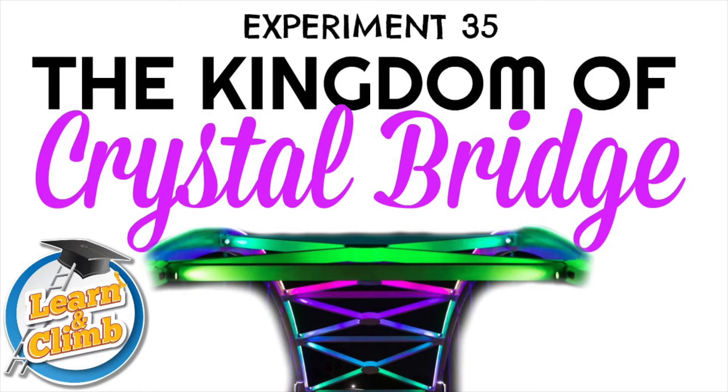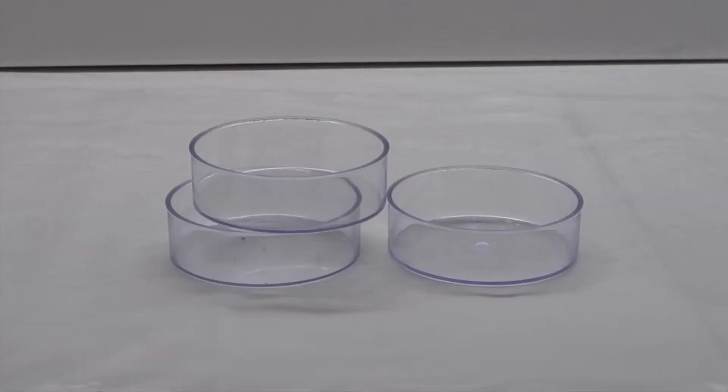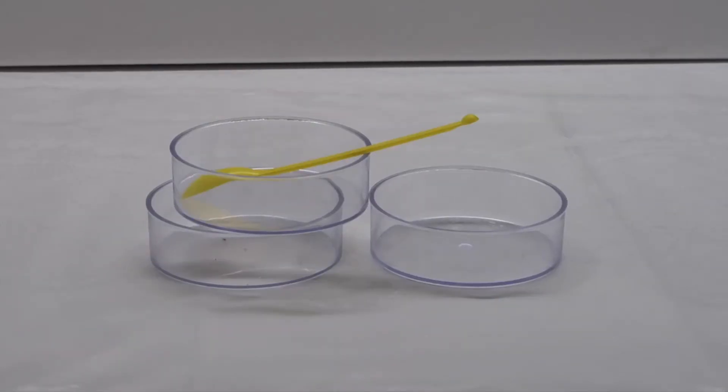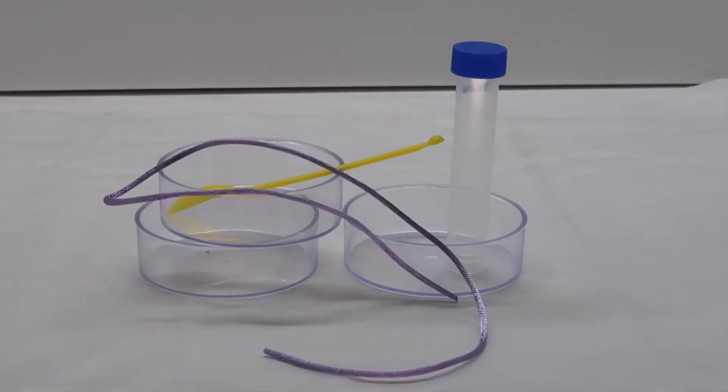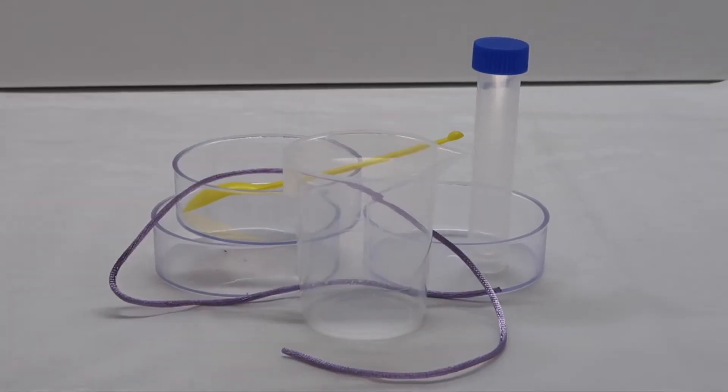Experiment 35: The Kingdom of Crystal Bridge. Tools needed from kit: 3 petri dishes, the yellow measuring scoop, 1 small test tube, purple string, a beaker. Ingredients needed from home: water,